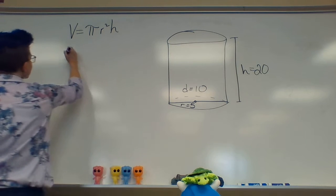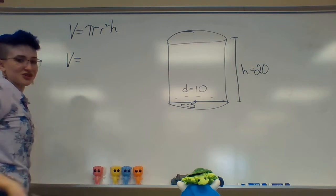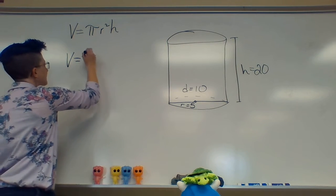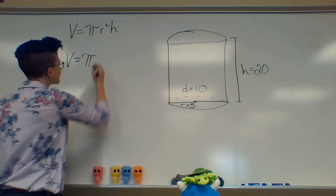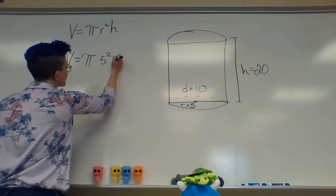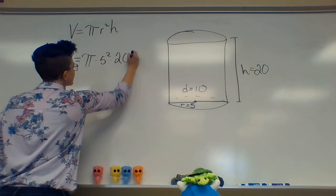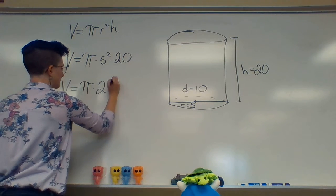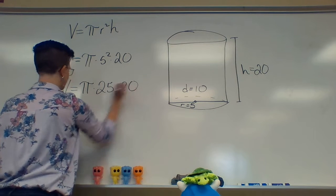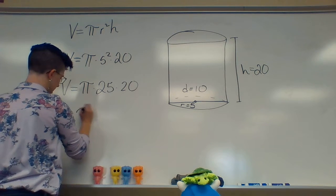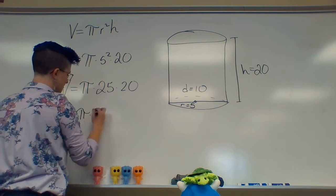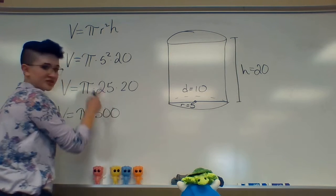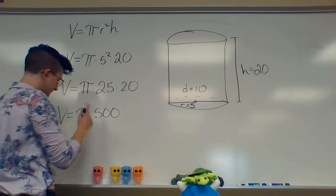We plunk those into my fancy-dancy equation over here. So r squared is now going to become 5 squared and 20. So that's 25 times 20. And 25 times 20 is now 500. If you do the math on it, it's 500.